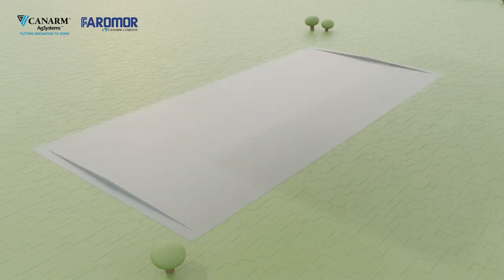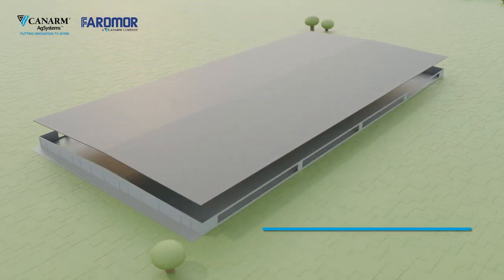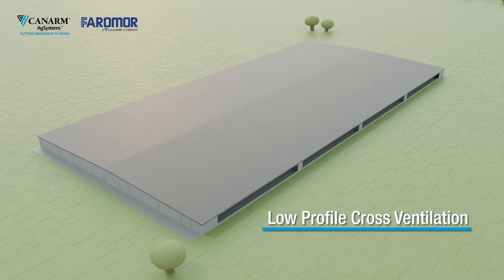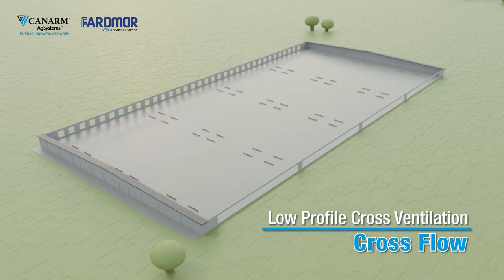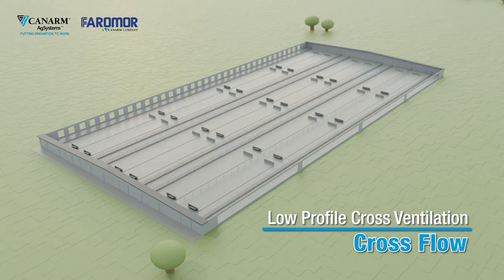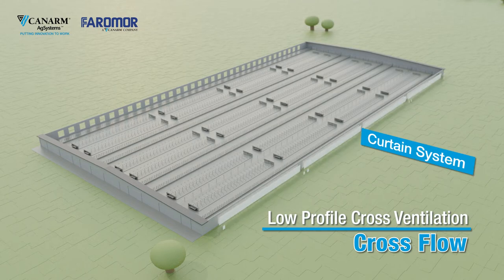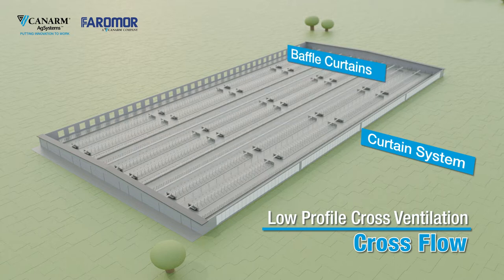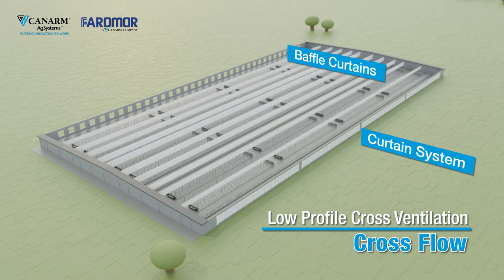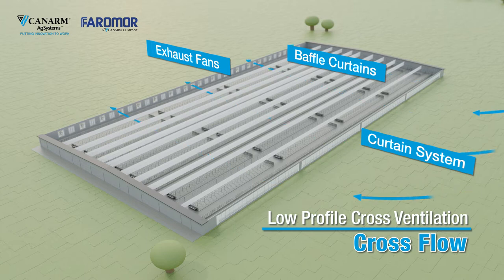A barn layout option to consider for large dairy herds is the low-profile, cross-ventilated free stall barn. Typically 8-16 stall rows wide, a cross-flow barn utilizes a curtain system on one long sidewall as an inlet, baffle curtains within the barn to direct airflow over the cows for maximum cooling, and a continuous bank of large capacity exhaust fans on the opposite sidewall to move the air.